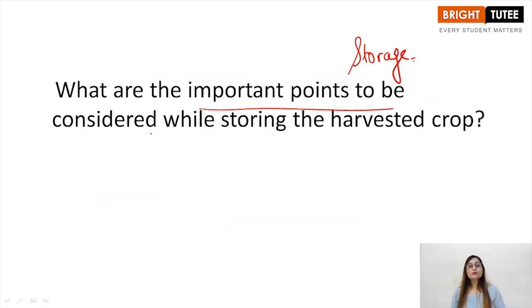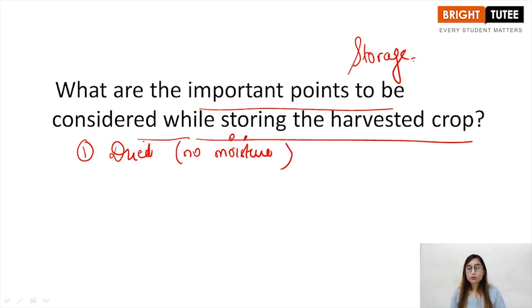What are the important points to be considered while the storage of harvested crops? Basically, the first point is that they must be dried. There must be no moisture, because moisture promotes the microbial growth.